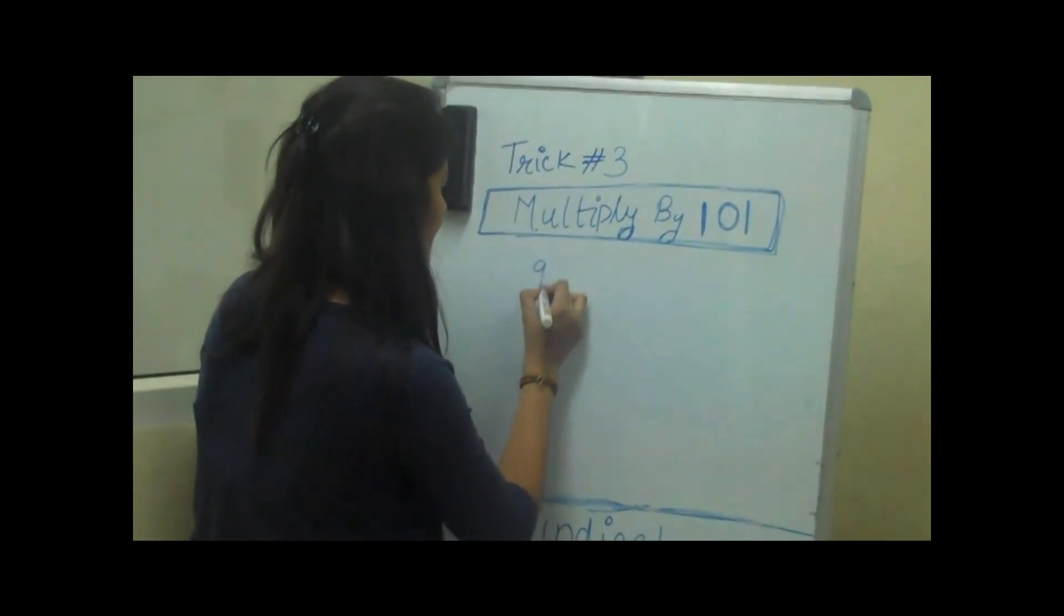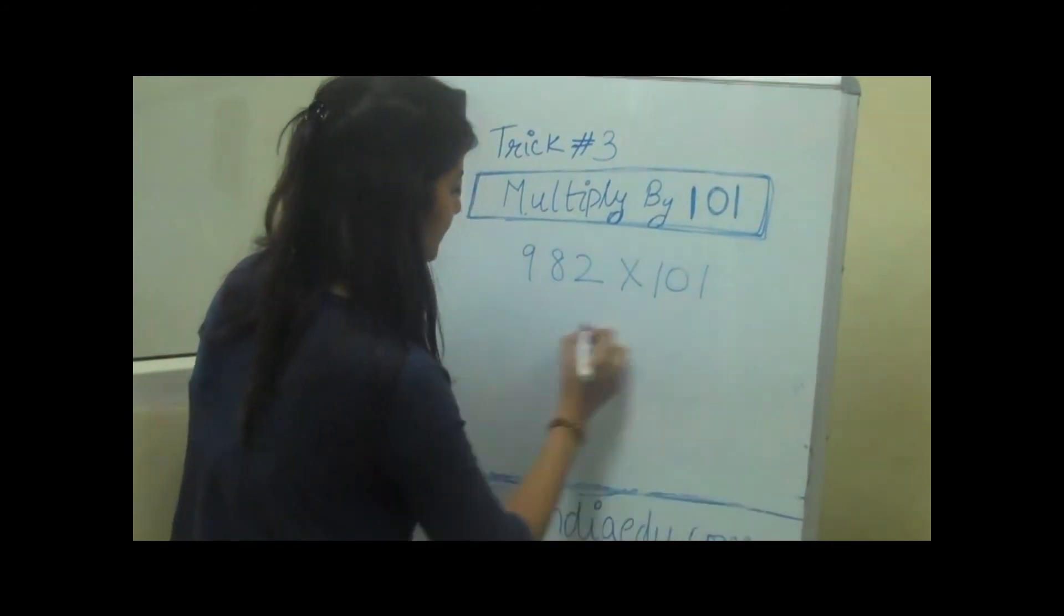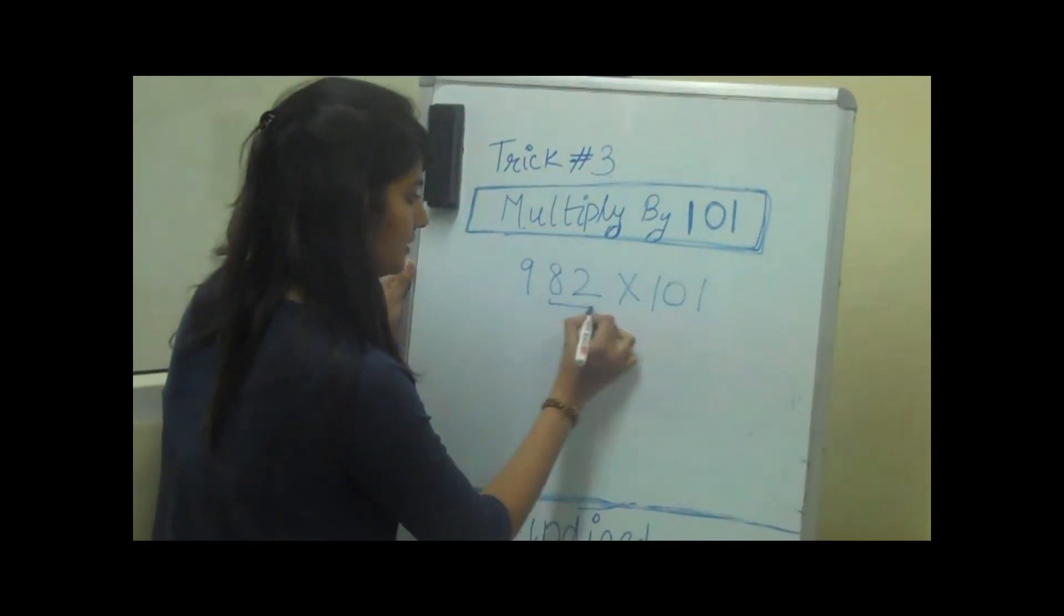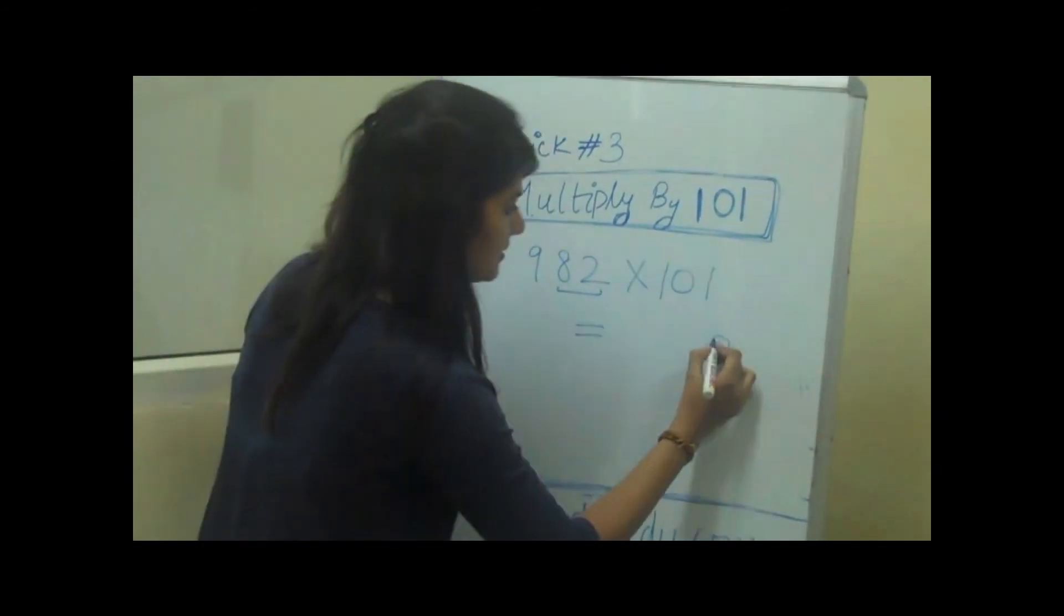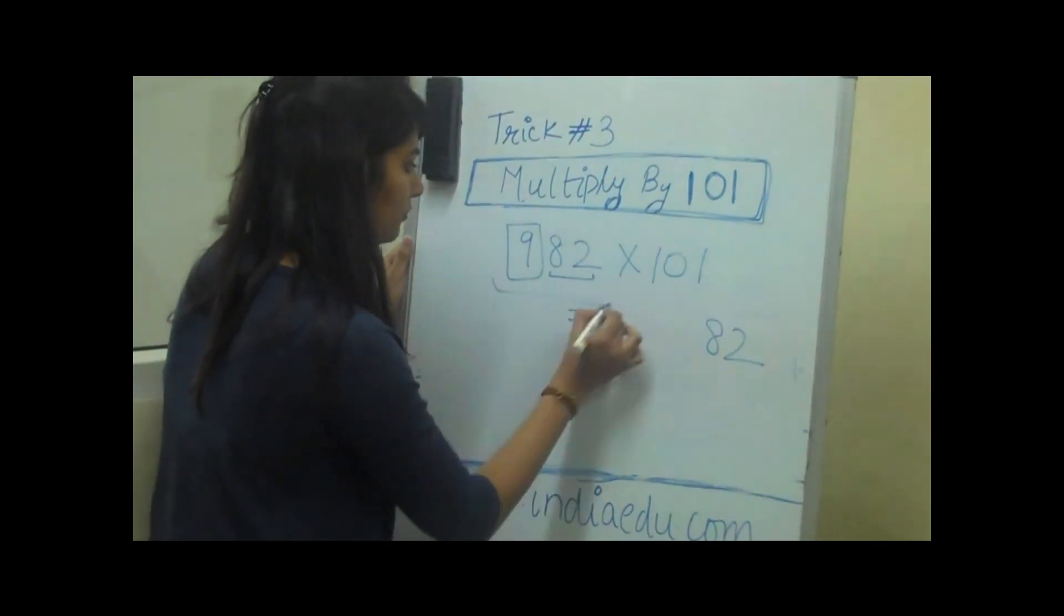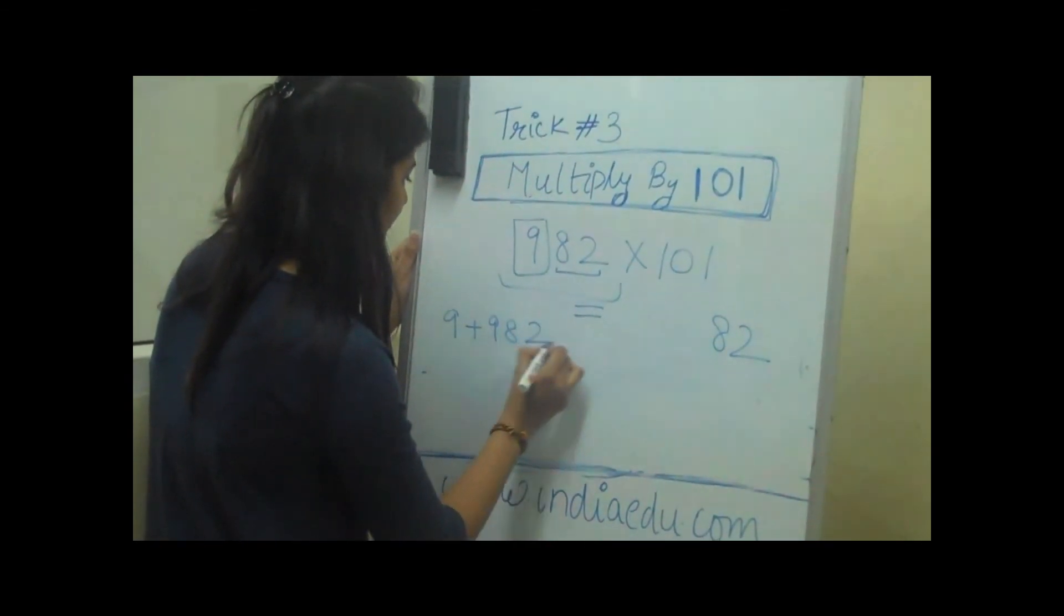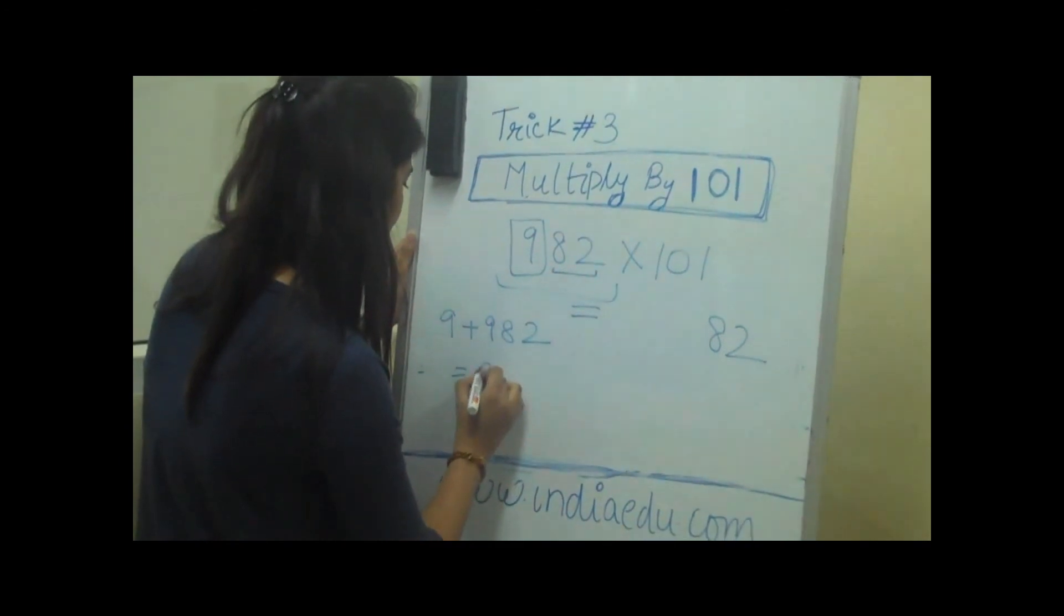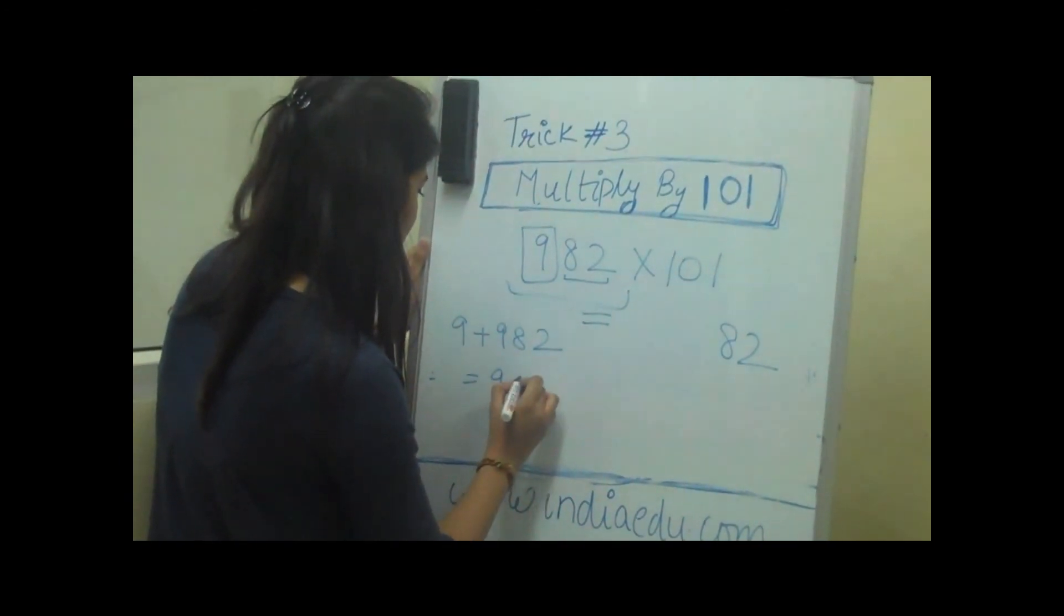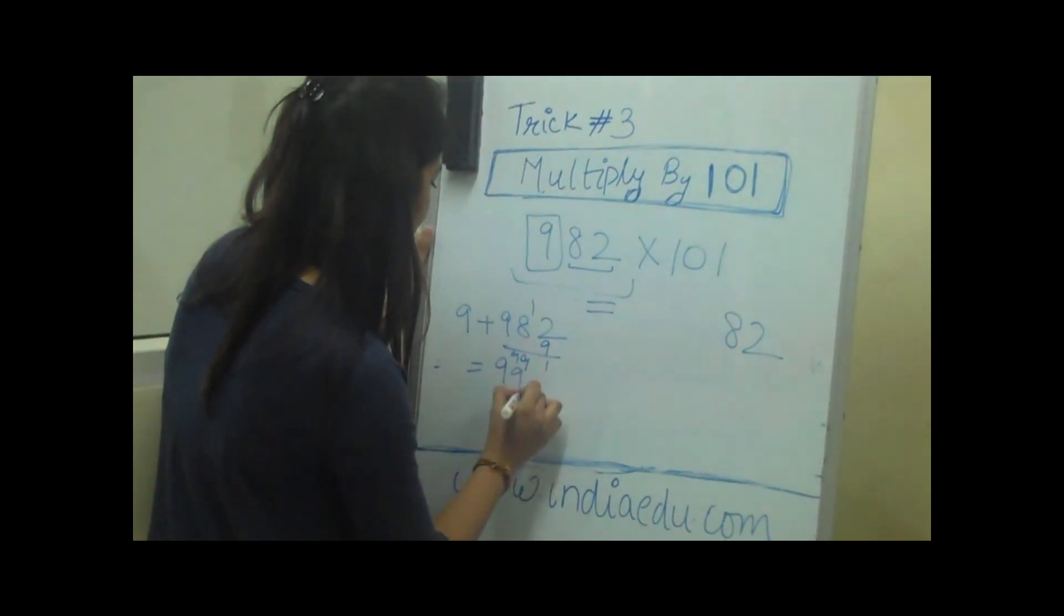If we have a number 982 and we want to multiply it with 101, the same way we will put 82 as is, and we will add this number to the whole of the number. 9 plus 982, which is 991.